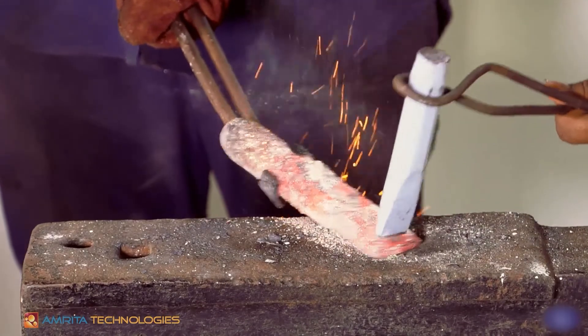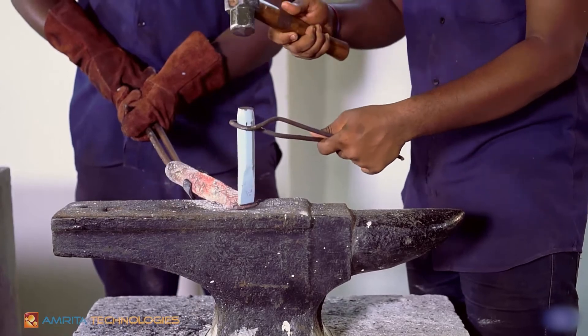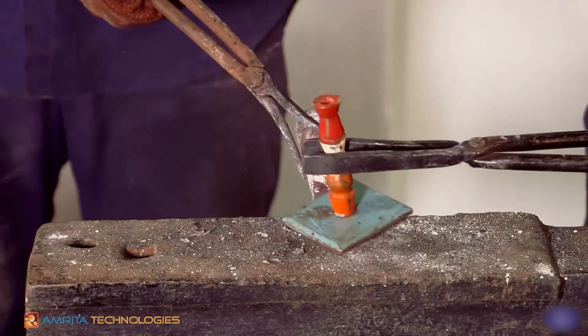Cut off the extra length with a hot set. Finish the chisel with the help of a flatter.